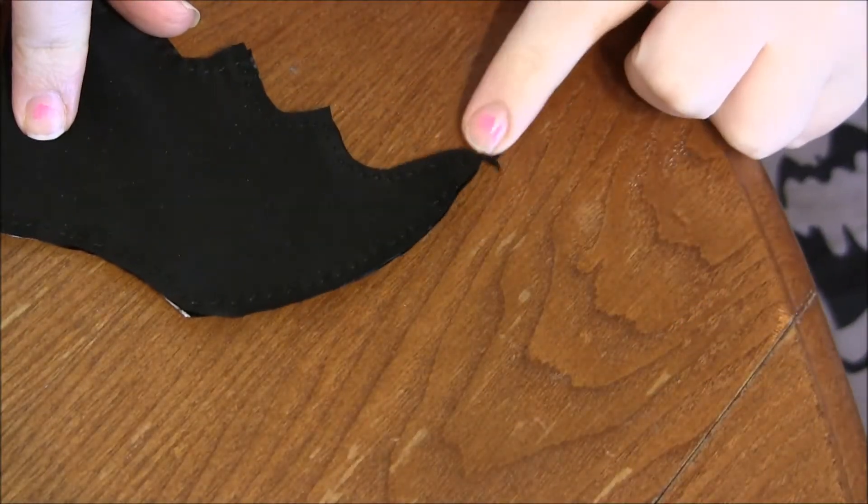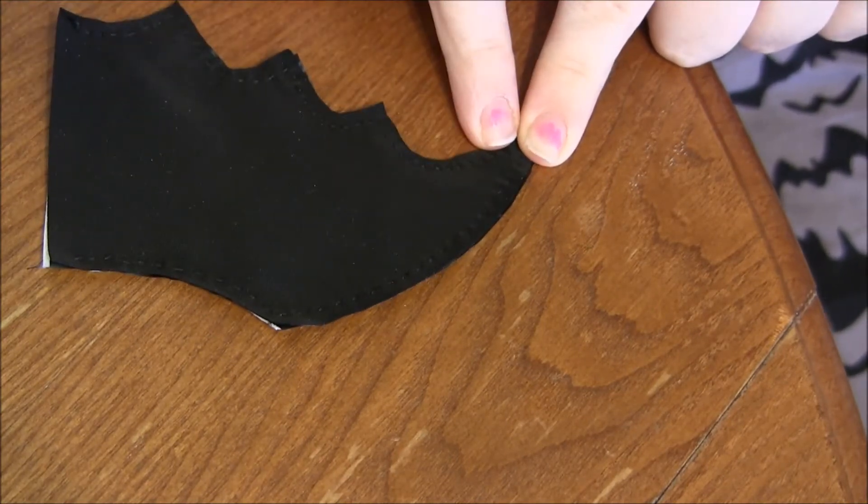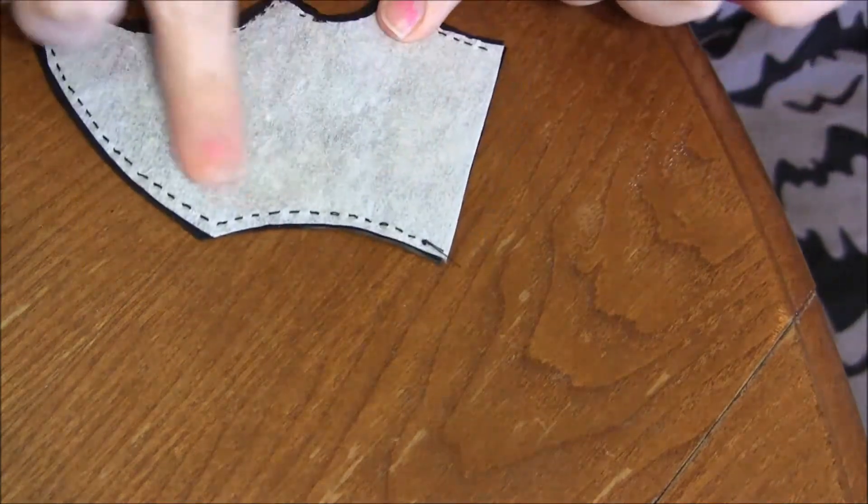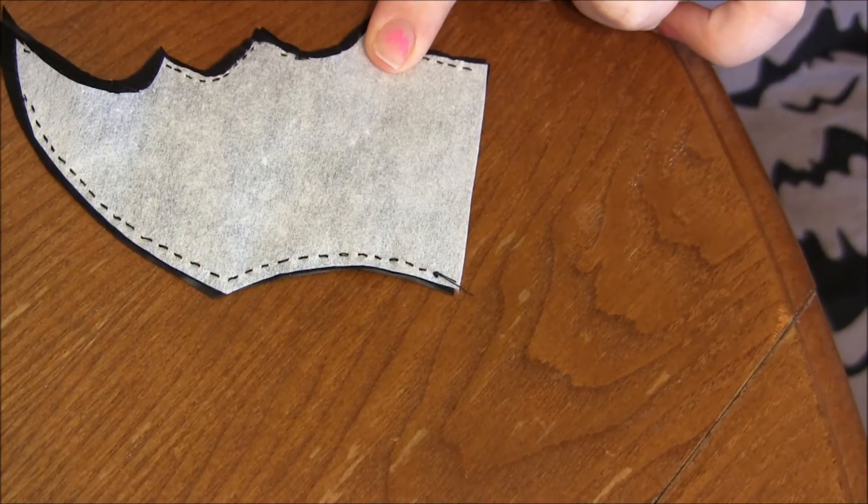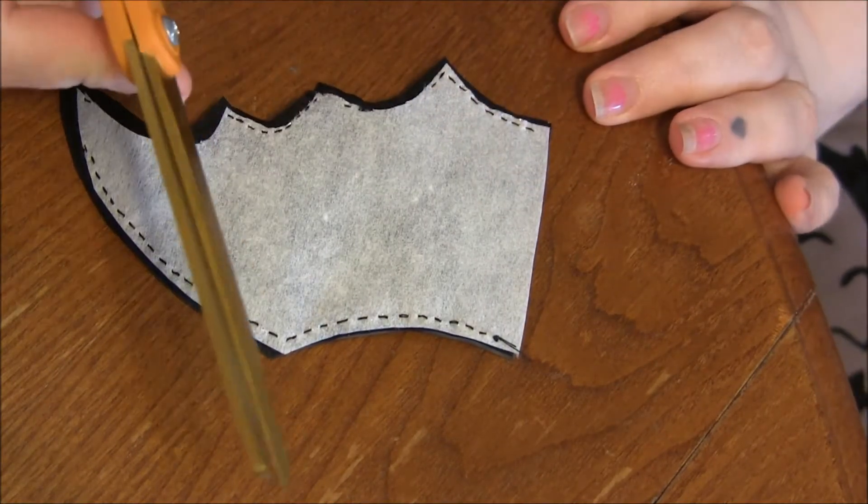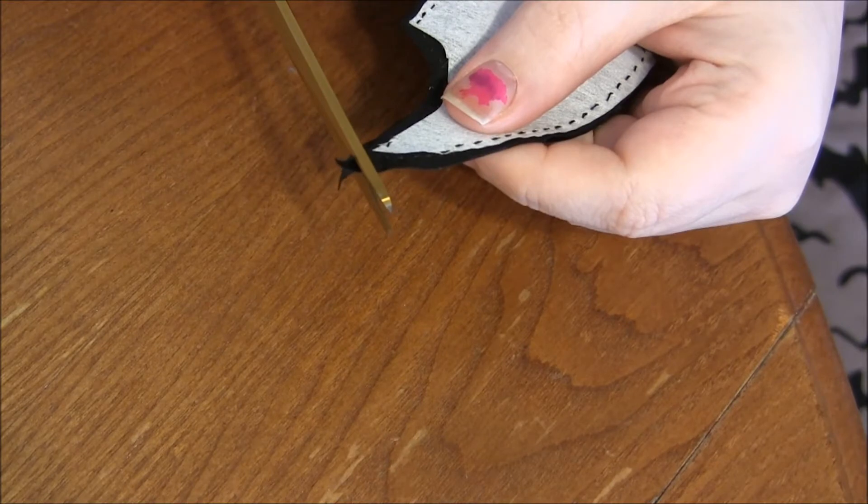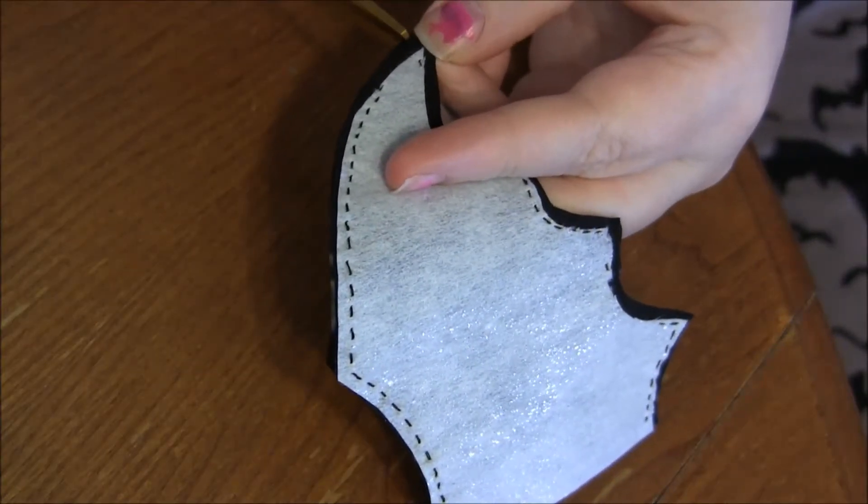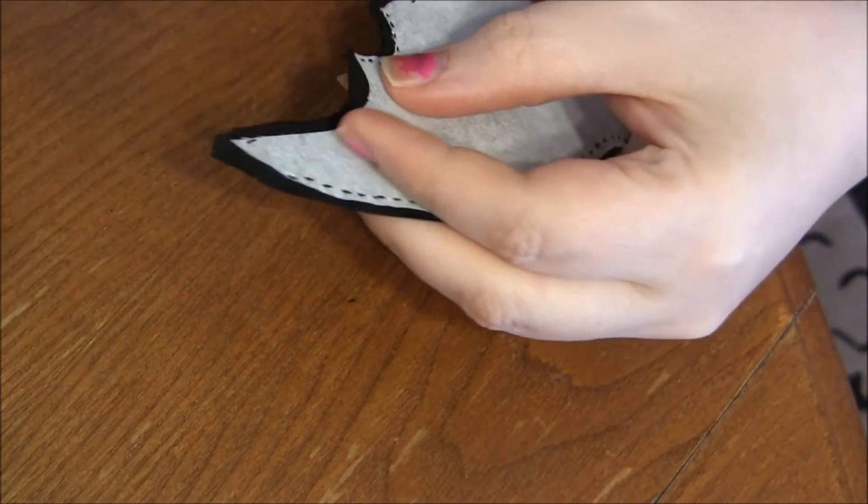You can see here how I did a really simple stitch around the whole wing. That shows you the interfacing that's inside. What you're going to do is take your scissors and cut off this long part that is not stitched, and very carefully cut some little tiny slits around some of the curved areas.